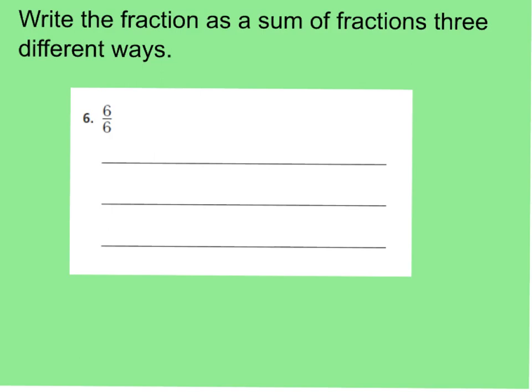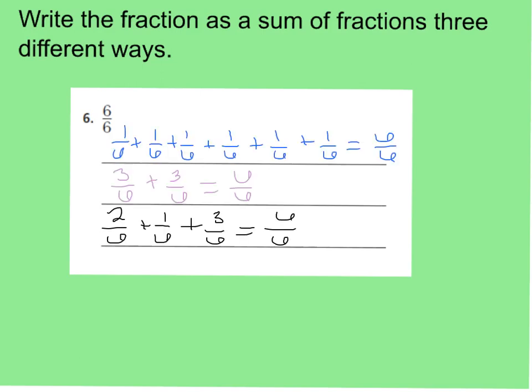Number six is the same thing — write the fraction as a sum of fractions three different ways. For six-sixths, go ahead and work on that and press play when you're ready to go over the answer. Here are the different ways to make a sum of fractions for six-sixths. You could have came up with different ways; as long as they add up to six-sixths, you're fine. I broke mine up into unit fractions and added one-sixth six times to get six-sixths. My next one was three-sixths plus three-sixths, which equals six-sixths. Then for my last one, two-sixths plus one-sixth plus three-sixths also gave me six-sixths.